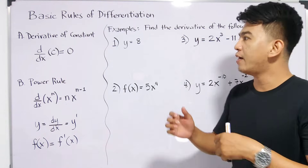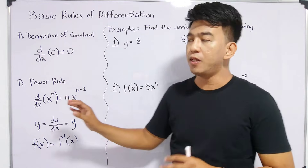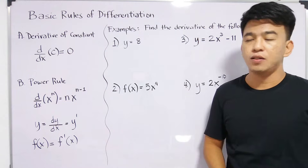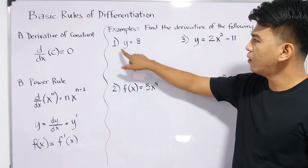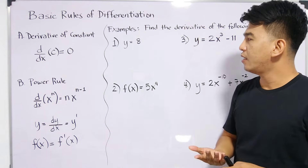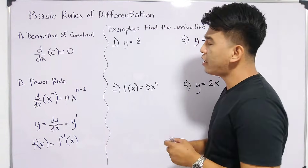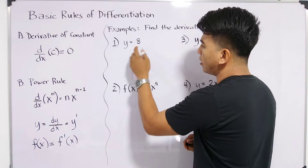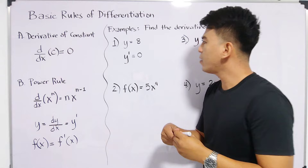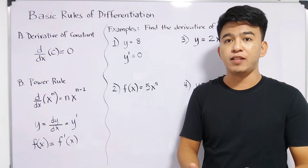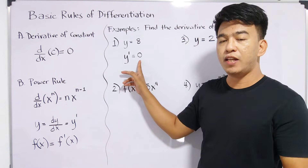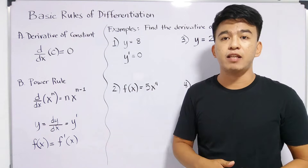For you to understand what I have said about the derivative of a constant and the power rule, let's have these examples. Find the derivative of the following. Number one: y is equal to 8. Since 8 is a constant, the answer is y prime is equal to 0. We use y prime because we are done getting the derivative of y, and based on our rule, if the given function is a constant, the derivative is automatically equal to 0.